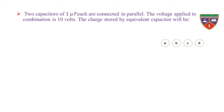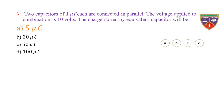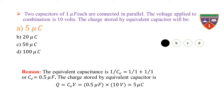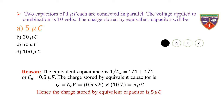Two capacitors of 1 microfarad each are connected in parallel. The voltage applied to the combination is 10 volts. The charge stored by the equivalent capacitor will be — option A: 5 μC, option B: 20 μC, option C: 50 μC, option D: 100 μC. The key is 5 μC; the correct option is A. Reason: 1/CE = 1/1 + 1/1, so CE = 0.5 μF. Q = 0.5 × 10 = 5 microcoulombs.